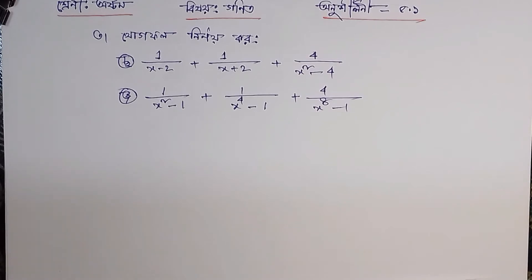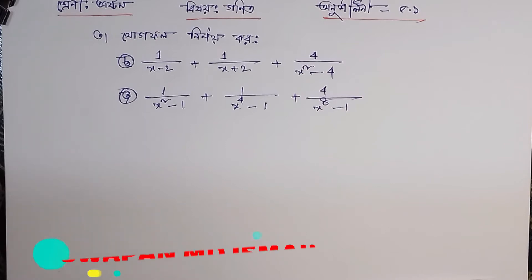Assalamu Alaikum, priyo bondhura. Kemon achen? Asha kari shabai onek bhaalo achen bondhura. Aamadir aaskar shumadhan, ashtam shrenir ganit, onek shilani 152 — ame ki khir tini nambar ankoti farnir naai karo aamadir aaskar.